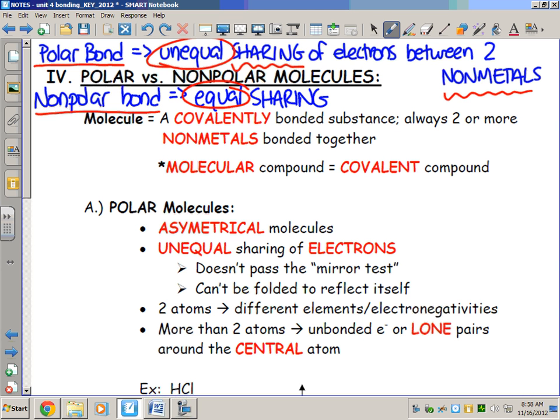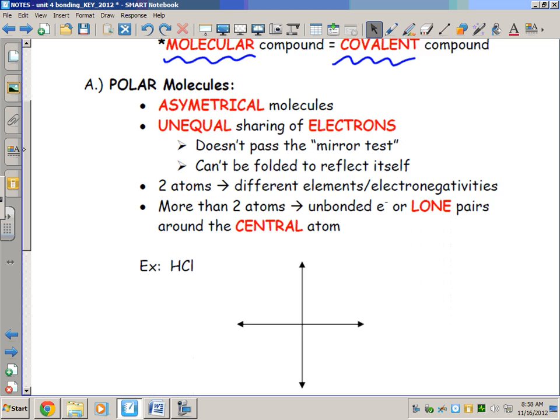I'm going to review a little bit here because I can't stress these terms enough. Molecules are covalently bonded substances. There's only one scenario for having a covalent compound and that's when you have two or more nonmetals. The terms molecular and covalent are synonyms - they'll be used interchangeably throughout the year and on the regents exam.